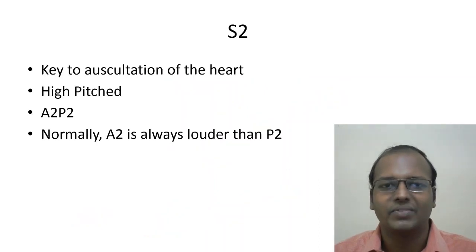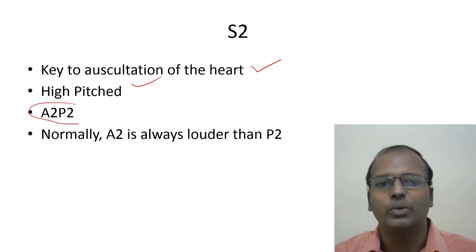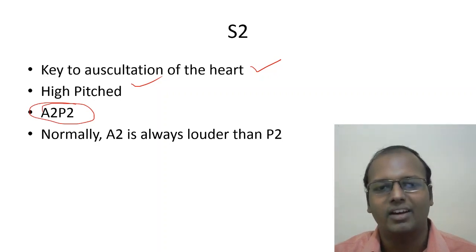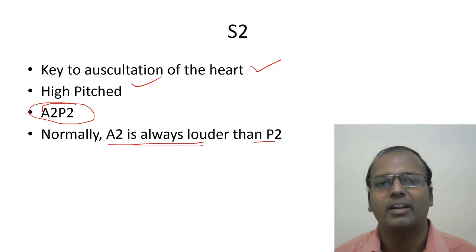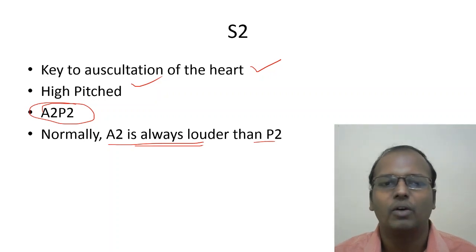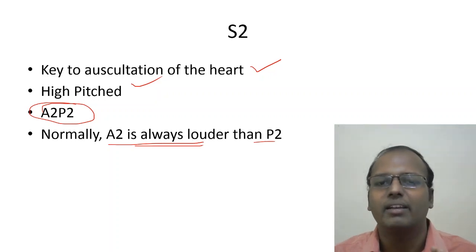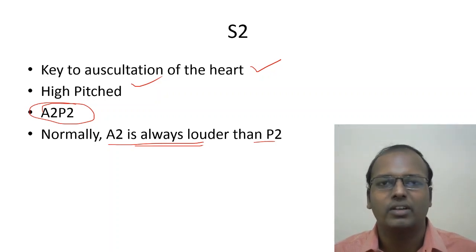S2 is called the 'key to auscultation of the heart.' It is high-pitched and has two components: A2 (aortic) and P2 (pulmonary). Normally A2 is always louder than P2 because the aortic systemic pressure (~120 mmHg) is higher than pulmonary pressure. Wherever you auscultate, A2 is louder than P2. The A2-P2 split widens during inspiration. You should be able to explain normal split, reverse split, and their significance.